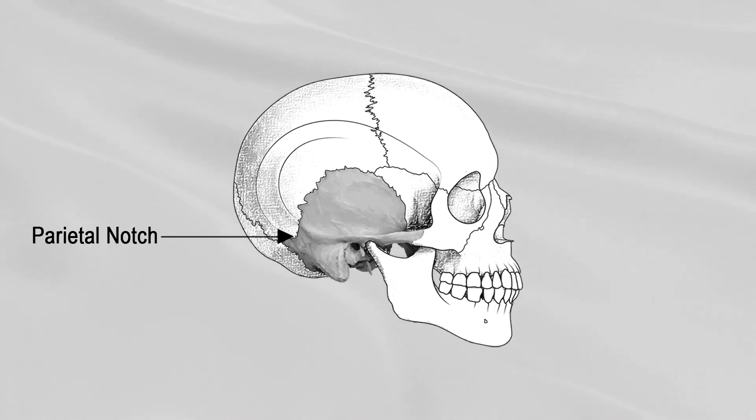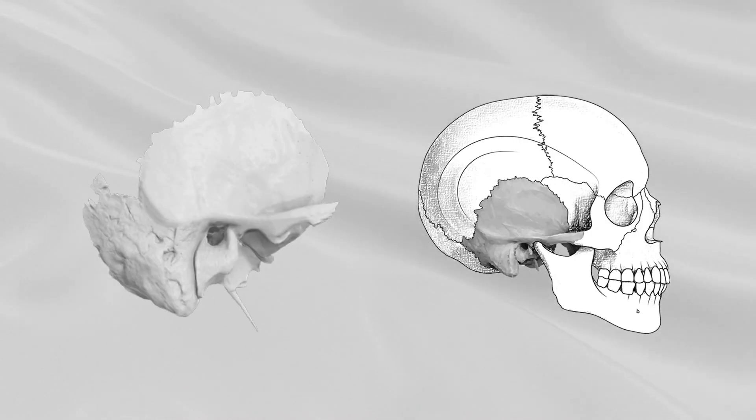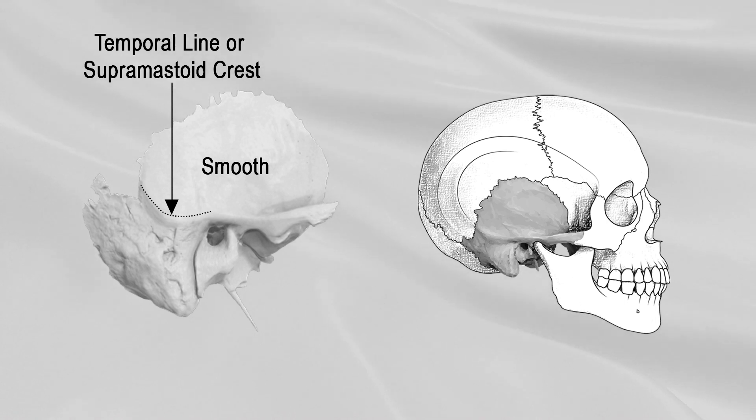The outer surface of the squamous part is smooth. Temporal line, also known as supramastoid crest, is a curved line that runs backward and upward across posterior squamous part. The boundary between the squamous and the mastoid part of the bone lies about one centimeter below this line and is indicated by traces of the original suture.